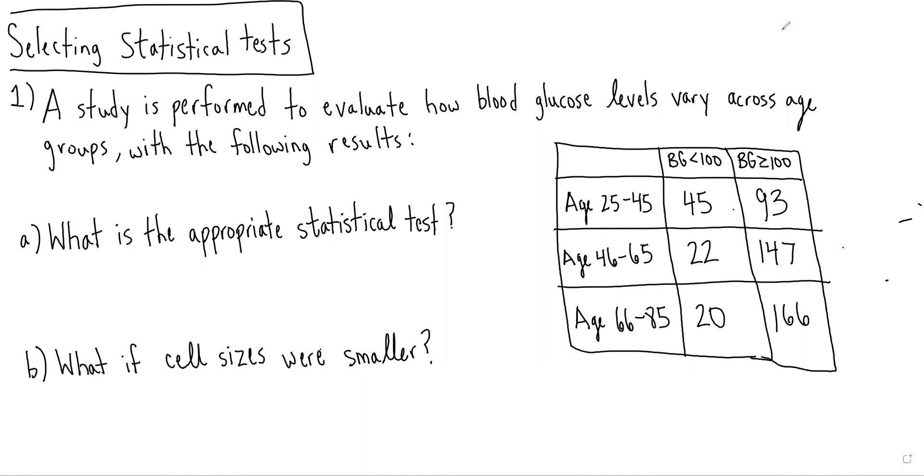So in this case, a study is performed to evaluate how blood glucose levels vary across age groups, with the following results shown in a three by two table. And we're asked, what is the appropriate statistical test?